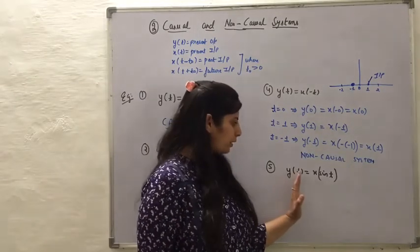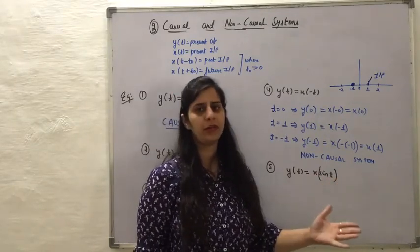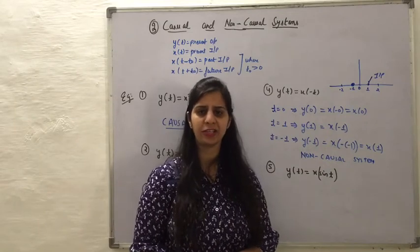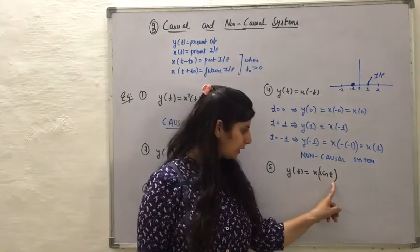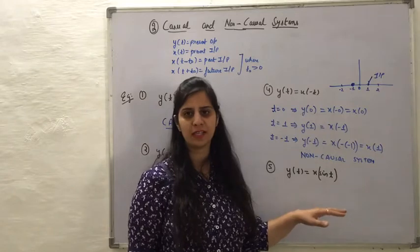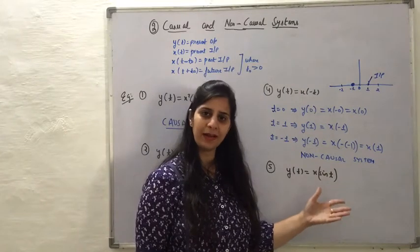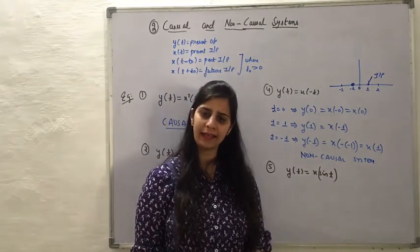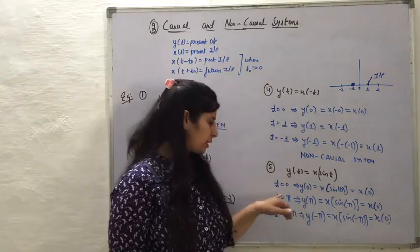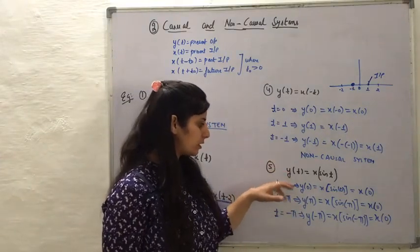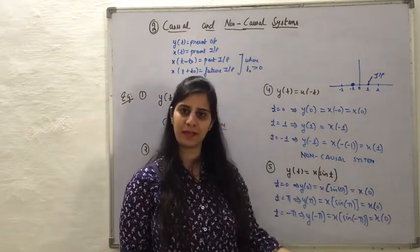In the next example, the output is related to the input by y(t) = x(sin t). We do not have a direct relationship between x(t) and y(t), so we again substitute values of t. Since we need to evaluate the sine function, I will take t in terms of 0, π, 2π and so on. When t = 0 and substituting into the equation, y(0) depends upon x(0), so the present output depends upon the present input.